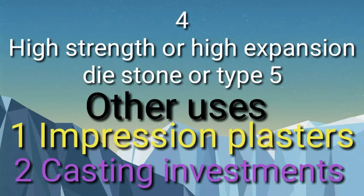Number four: high strength or high expansion die stone, or Type 5. Other uses of these materials include: number one, impression plasters — we use this plaster for making impressions; number two, casting investment — 60 to 70 percent calcium sulfate is used in any casting investment.